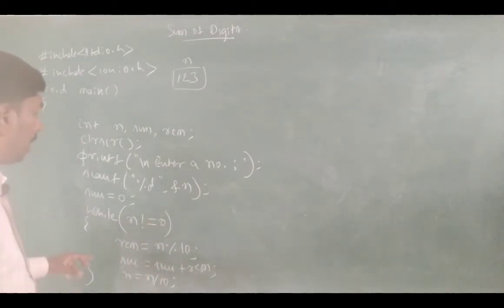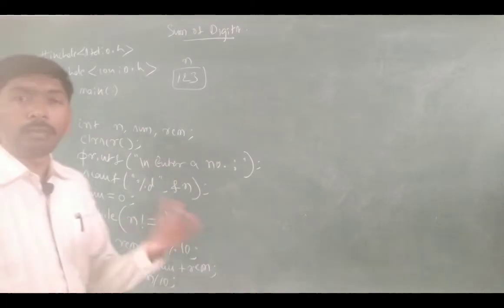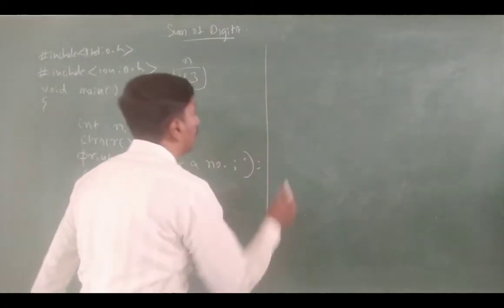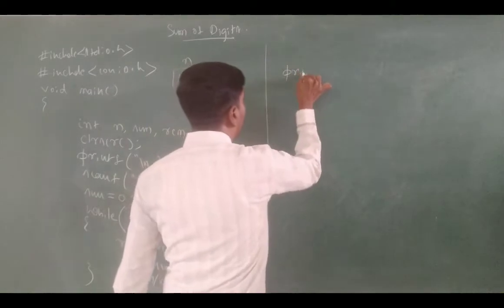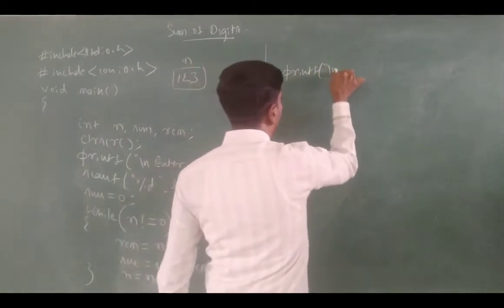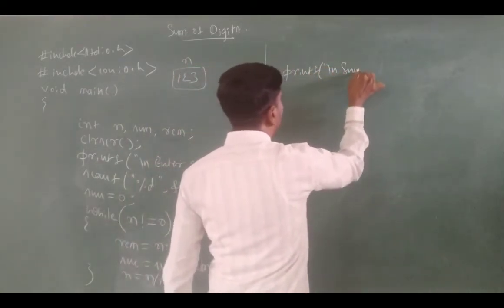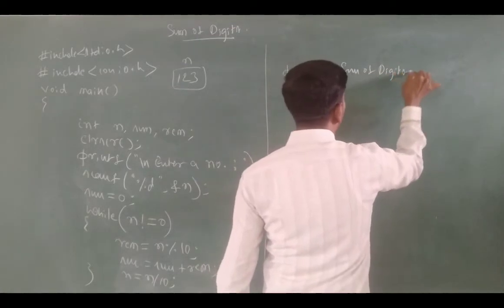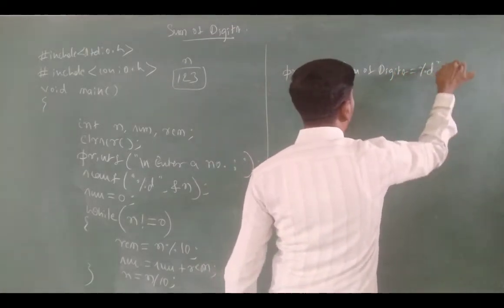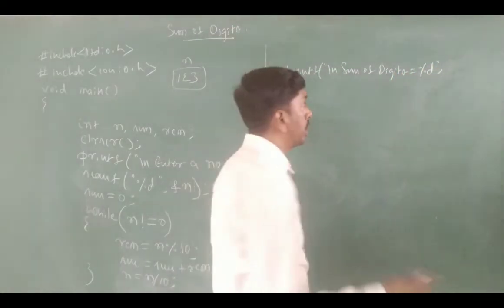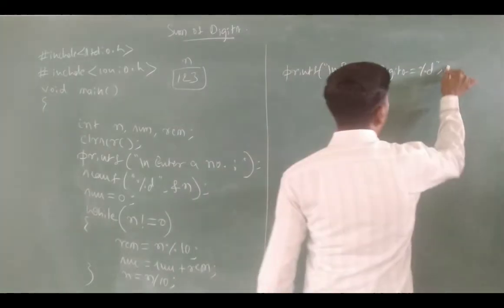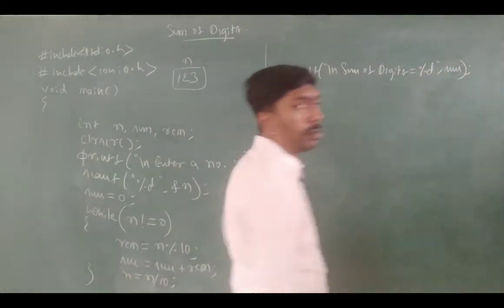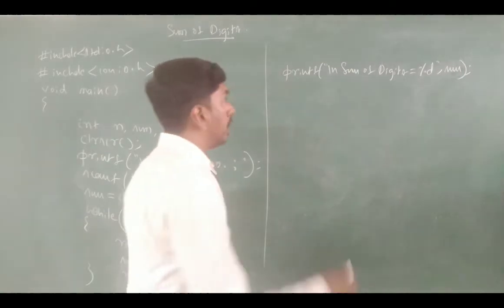After the while loop finishes its full execution, we get the sum of digits answer. Then we write the printf statement to display the result.